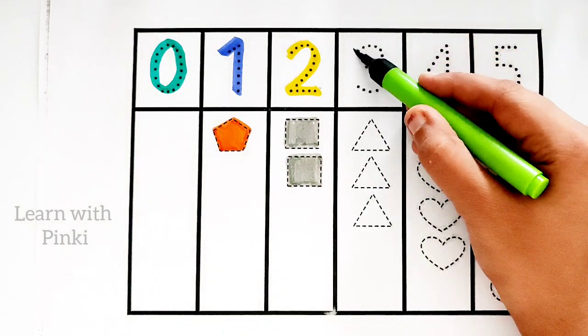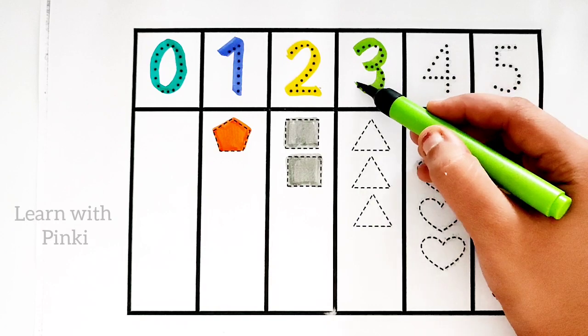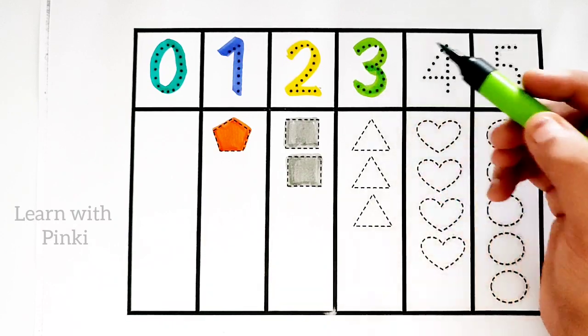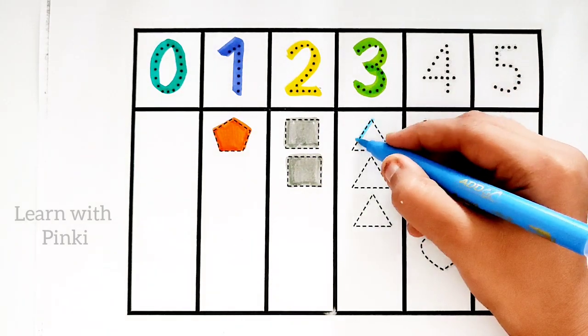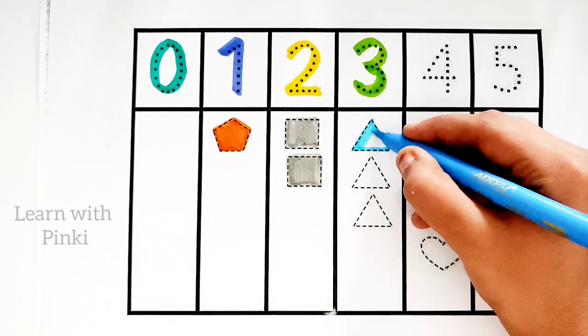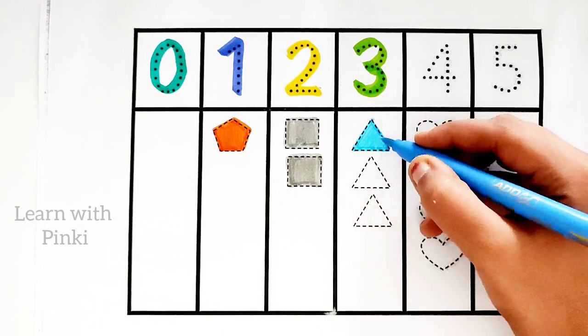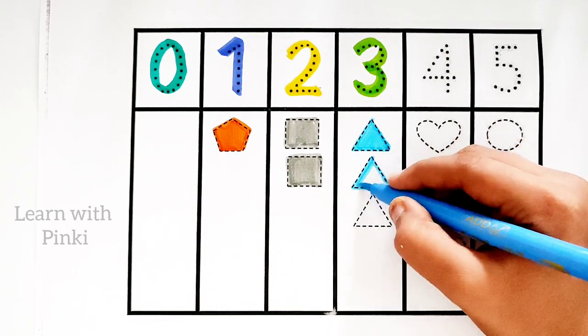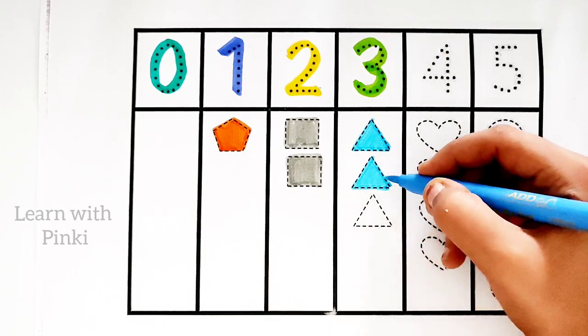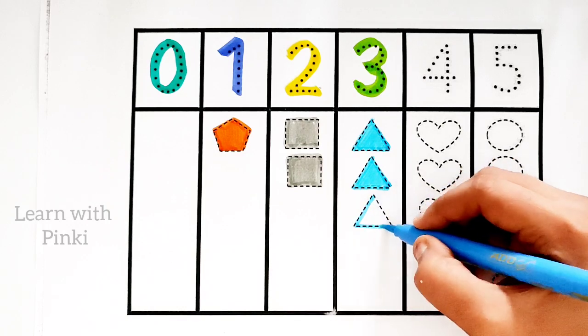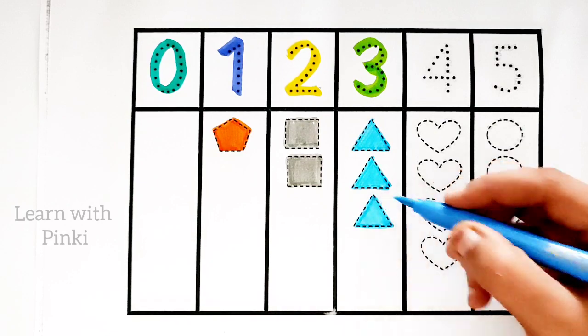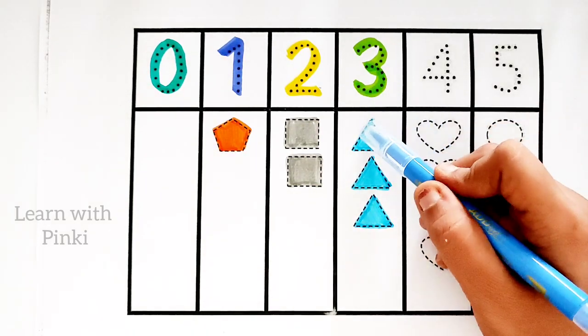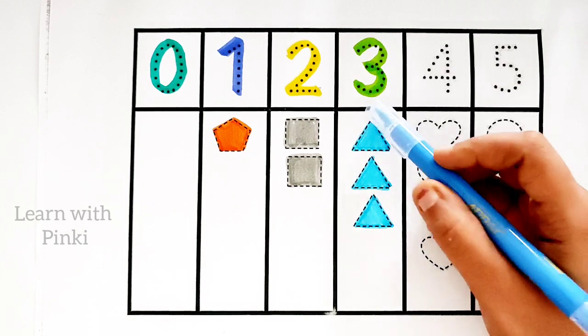Light green color, number 3, number 3. Sky blue color, triangle. 1 triangle, 2 triangles, 3 triangles. Number 3: 1, 2, 3, 3 triangles.